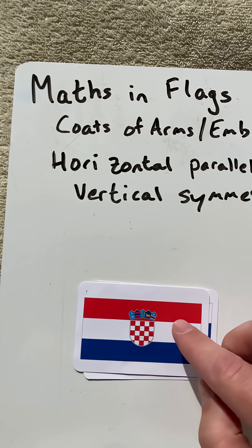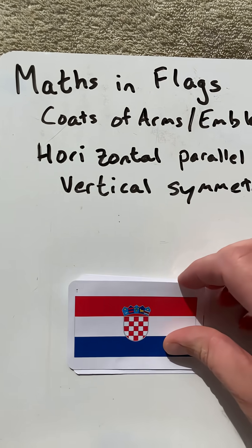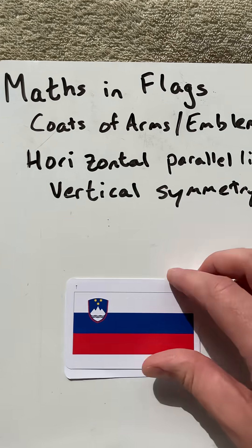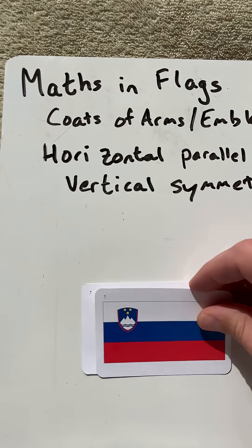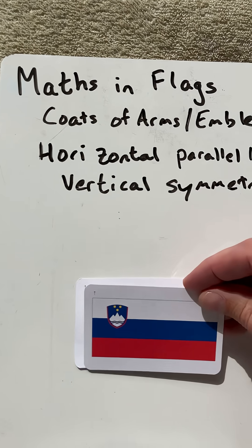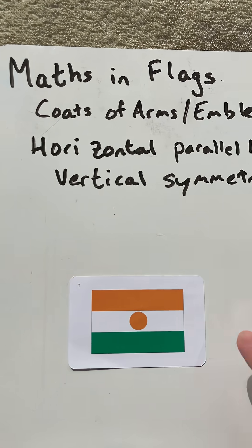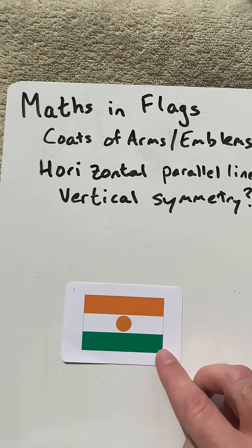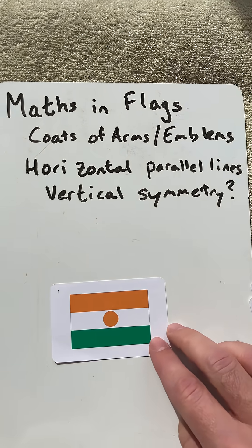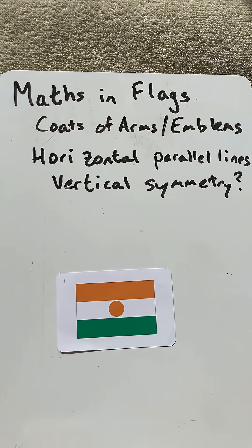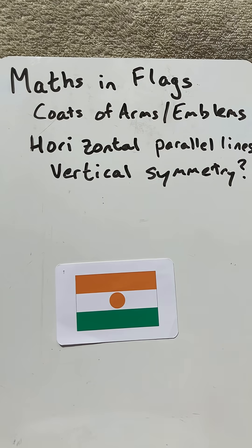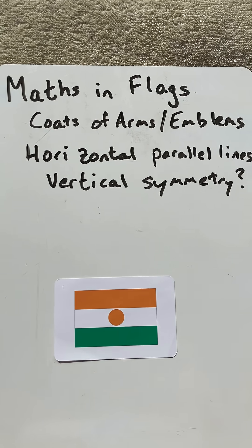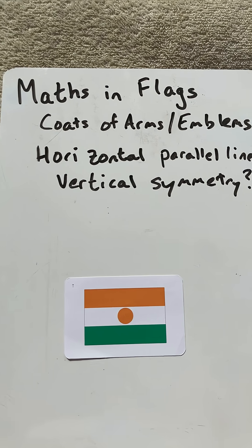Croatia — the coat of arms is different at the top, so no vertical symmetry there. Slovenia is to the top left, so not there. But Niger absolutely does. That's flags with coats of arms, horizontal parallel lines, and asking whether they have vertical symmetry. Thanks for watching.